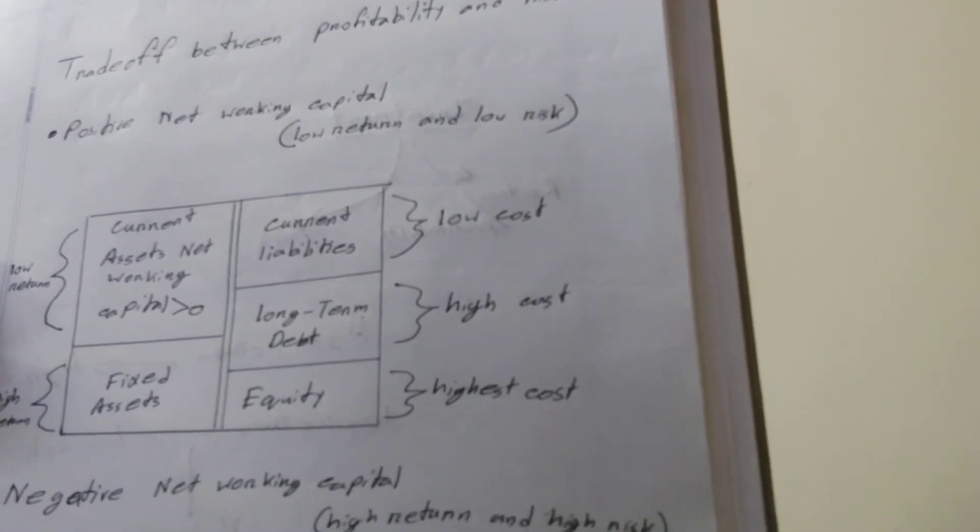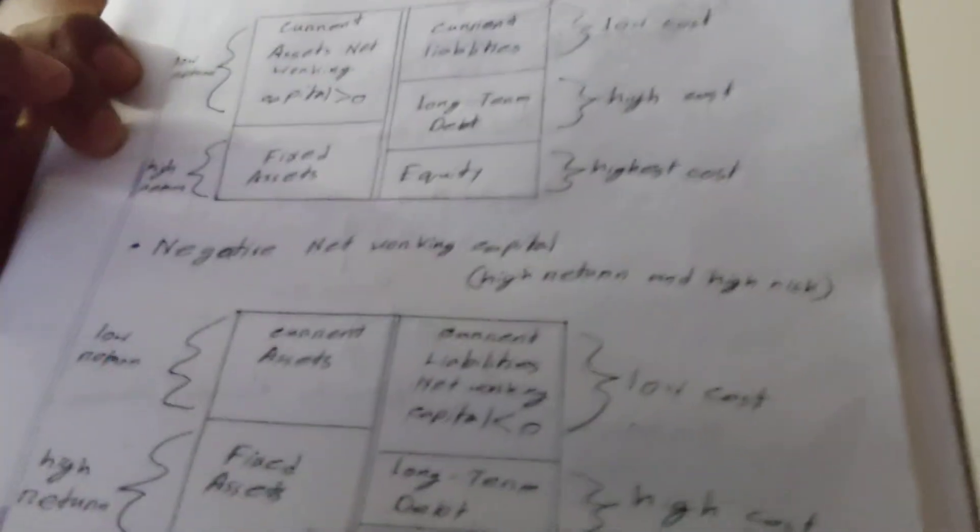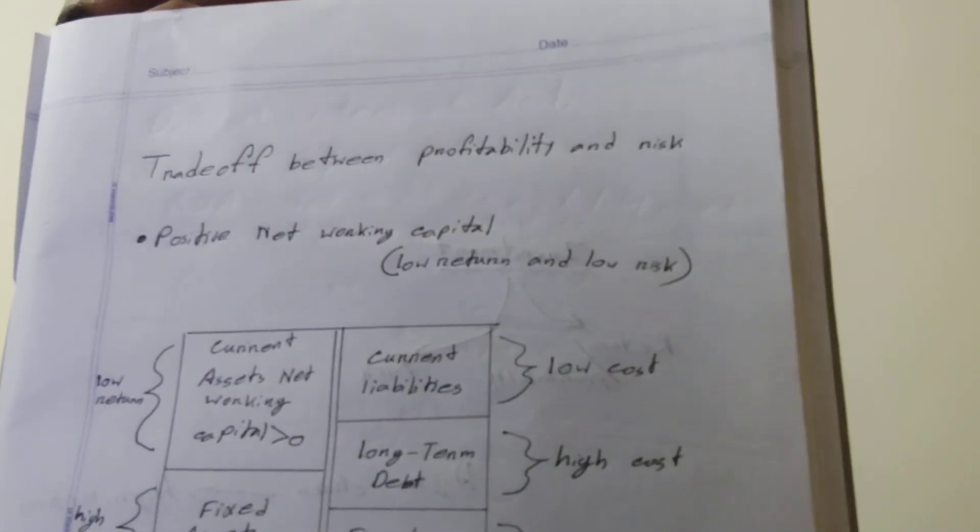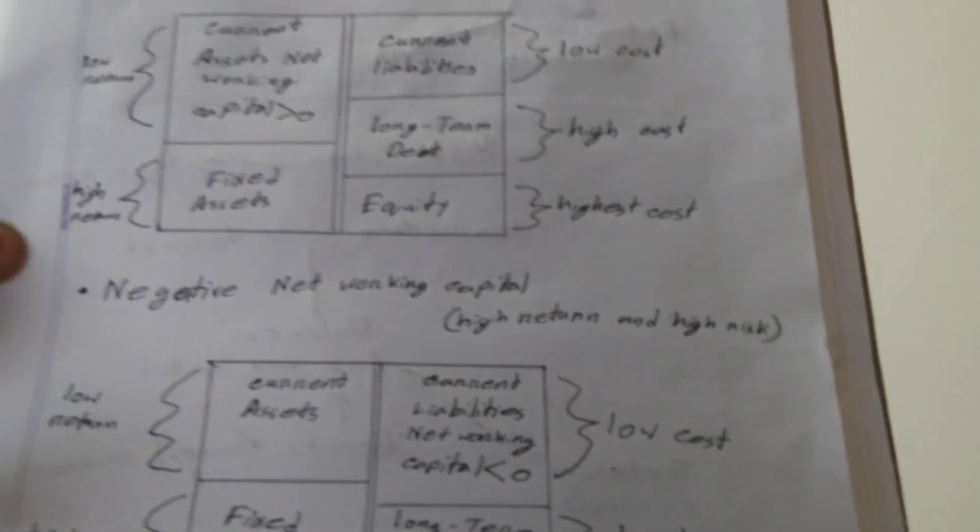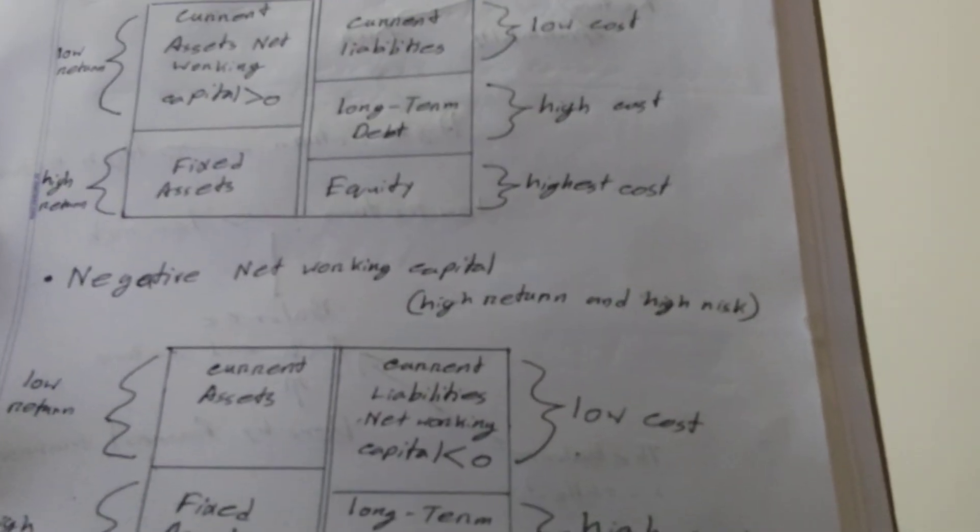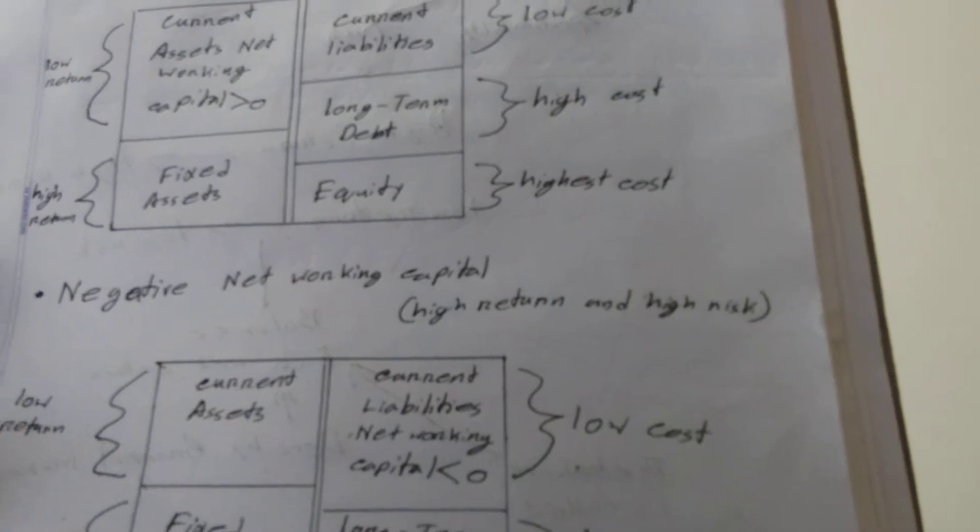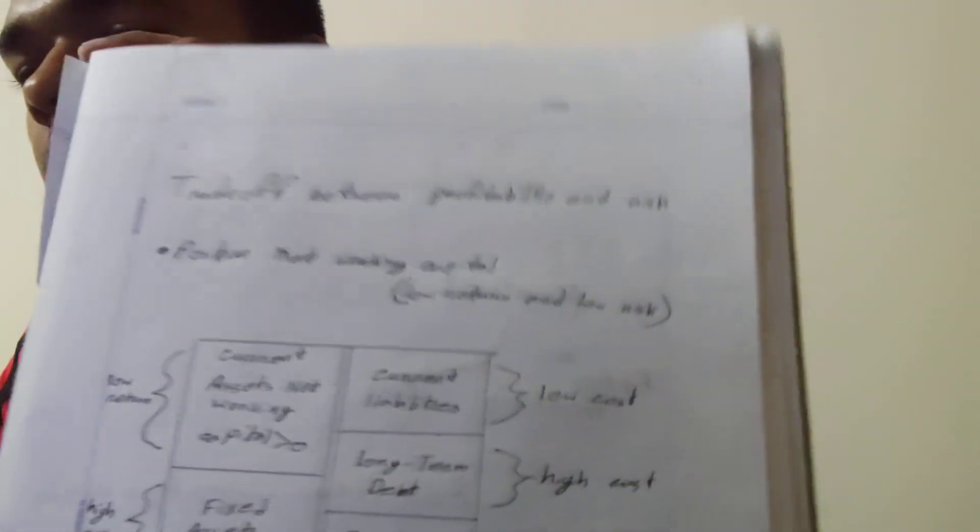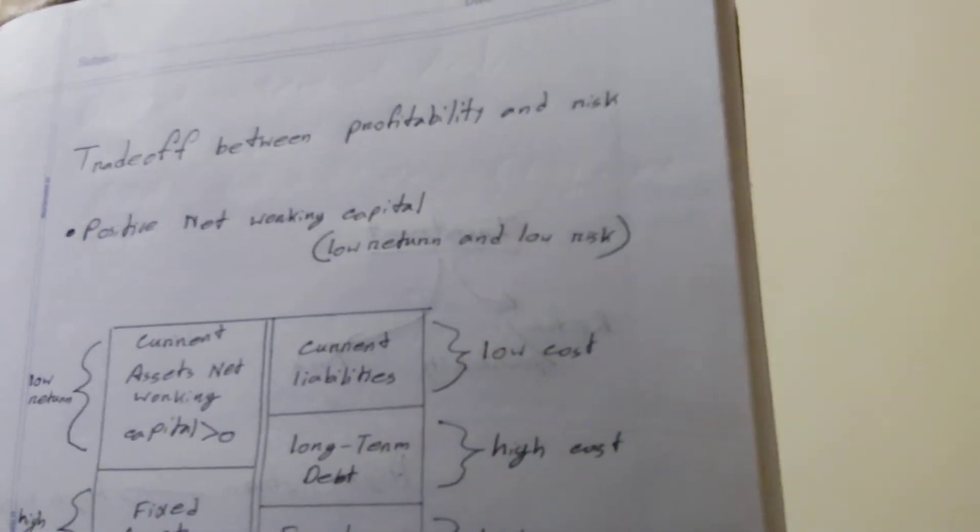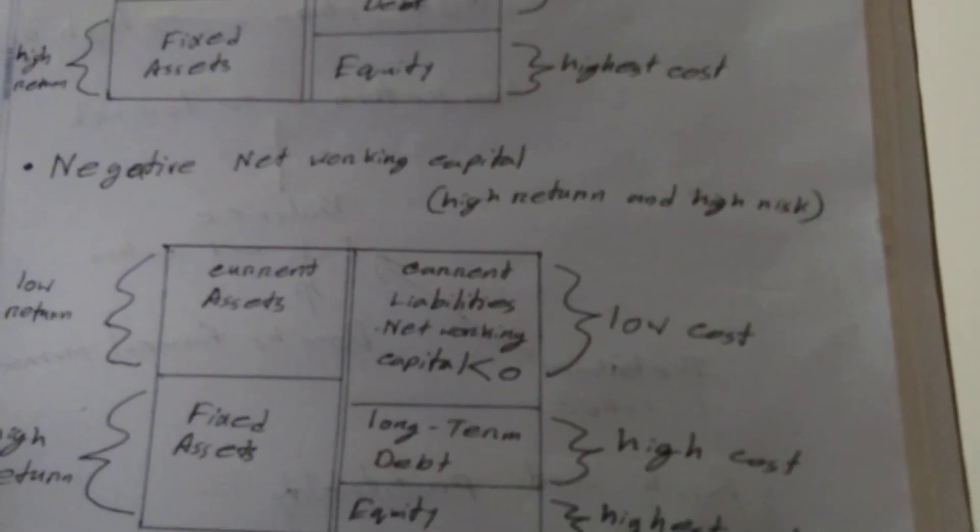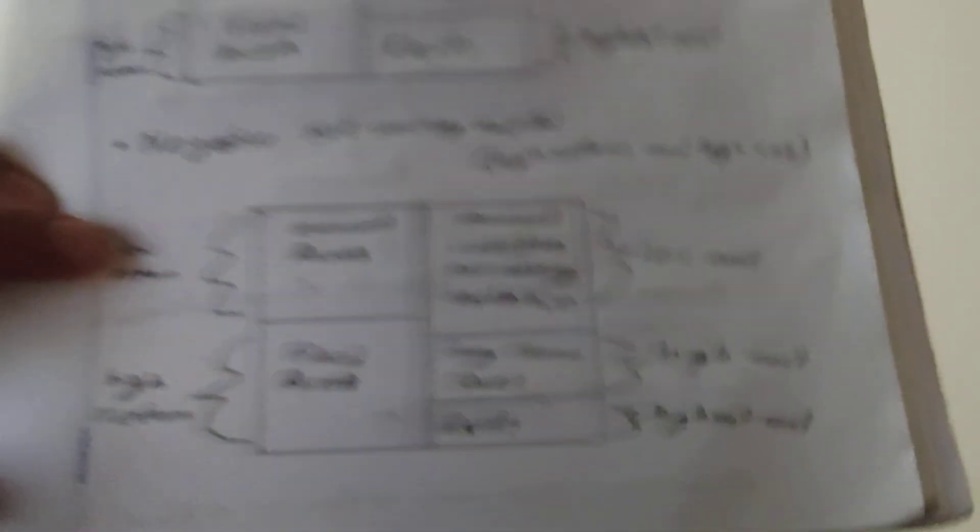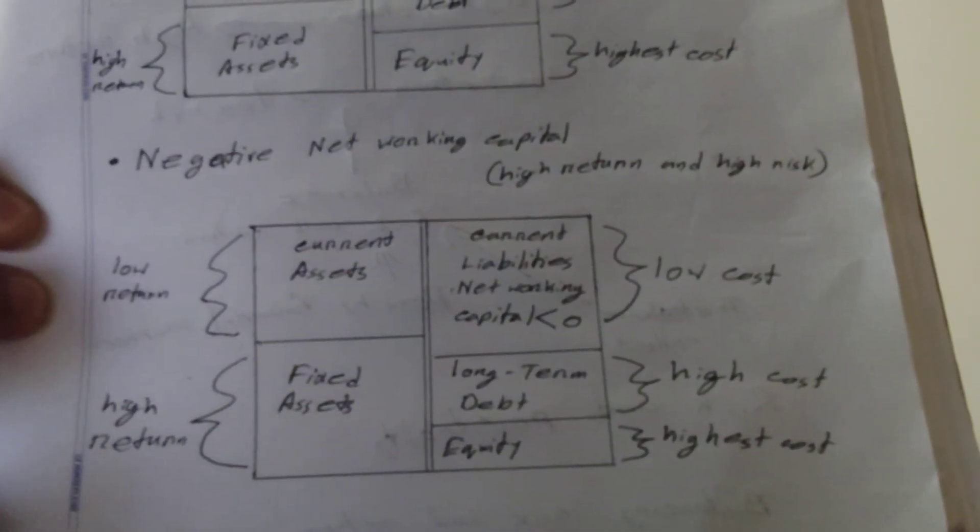Just like this one, if the networking capital is high, then we have high return and high risk. So in this case, the current asset has low return, the current liabilities, networking capital which is greater than zero has low cost, and the fixed assets have high return.